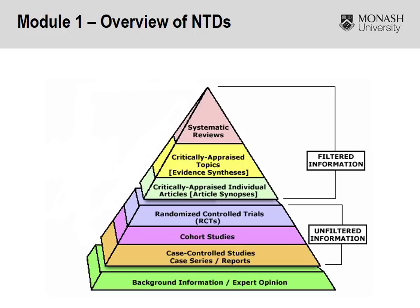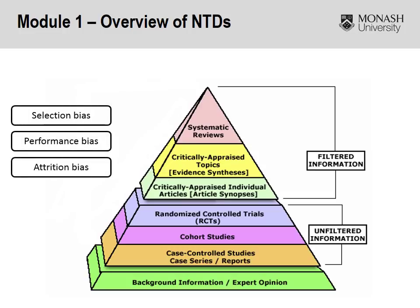The evidence pyramid is designed this way due to the type and number of biases that we can control for across study designs. There are four types of biases that can influence research designs: selection bias, performance bias, attrition bias, and detection bias. The beauty of RCTs is that we can control for all four biases simply by randomising, blinding, and performing an intention-to-treat analysis, which minimises the effects of those four biases.